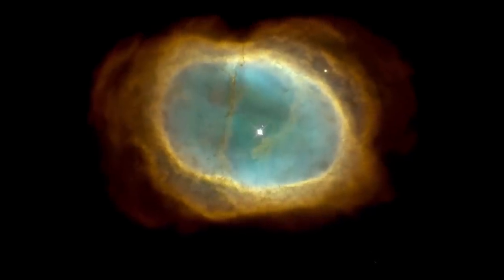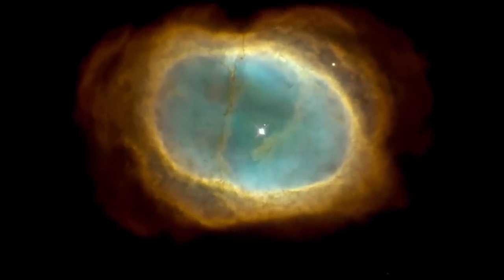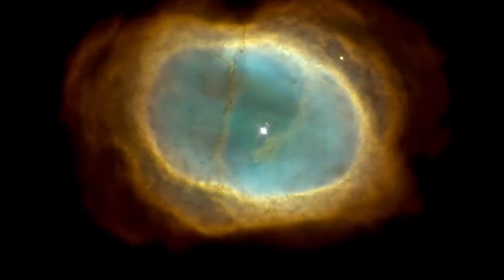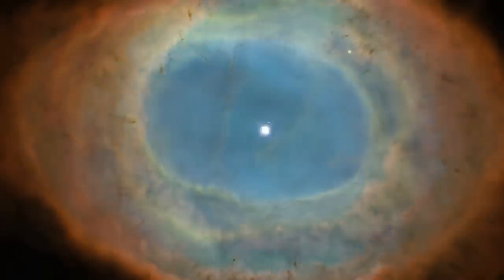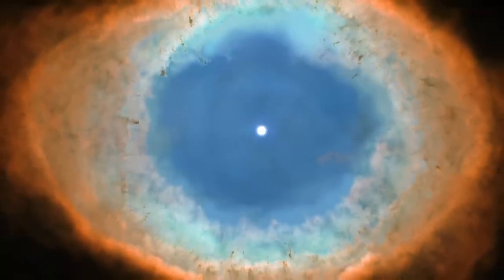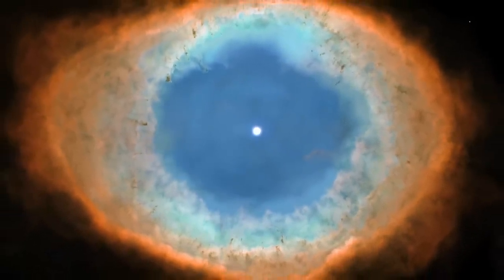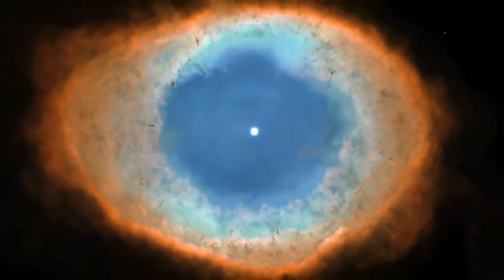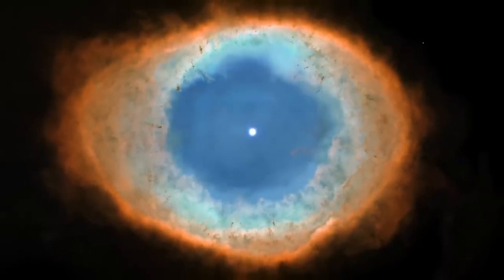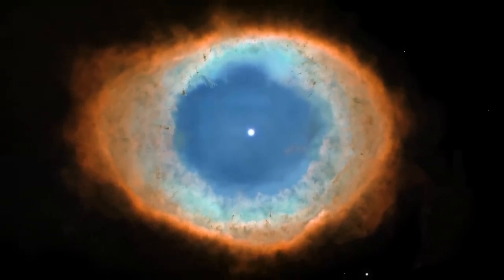These nebulae glow in all manner of beautiful colours, due to the presence of different gases. The famous Ring Nebula, for example, glows in vibrant blue-greens, reds and oranges, caused by regions of glowing oxygen, hydrogen and nitrogen.